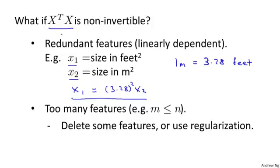The second thing that can cause X transpose X to be non-invertible is if you're trying to run a learning algorithm with a lot of features. Concretely, if m is less than or equal to n. For example, if you imagine that you have m equals 10 training examples, but you have n equals 100 features.